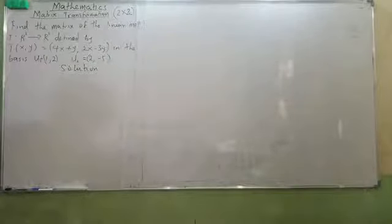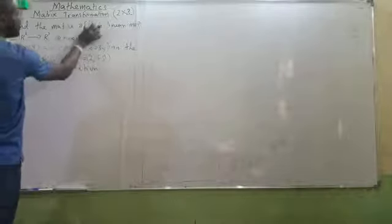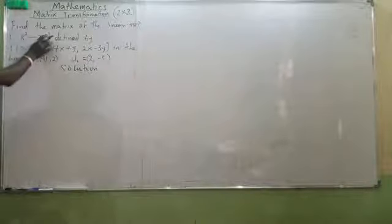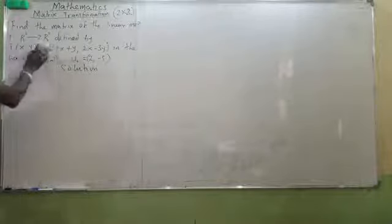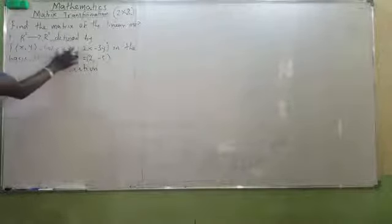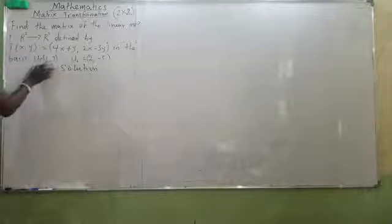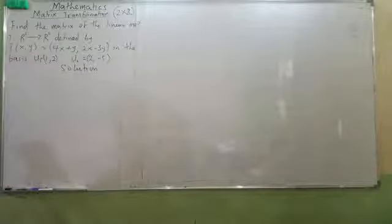The first thing I need to understand is: find the matrix of the linear map. This is the definition. Now, these are the basis vectors, which are u1 and u2 — u1 is equal to this, u2 equals to this. I want to solve this solution.